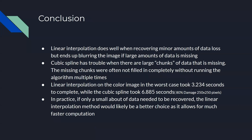In conclusion, we've determined that the linear interpolation method does best when recovery involves only minor amounts of data loss, but ends up blurring the image when large amounts of data are missing. Cubic spline has trouble when there are large chunks of missing data, because those chunks are not completely filled in. Linear interpolation on the color image in the worst case took just over three seconds at 3.234 seconds, while cubic spline took 6.885 seconds — this was at 80 percent damage on the 250 by 250 pixel image. In practice, if only a small amount of data needs to be recovered, linear interpolation would likely be the best choice as it is much faster to compute. However, given the smearing effect experienced at 80 percent damage, it would often be better to take the extra time to perform cubic spline interpolation.